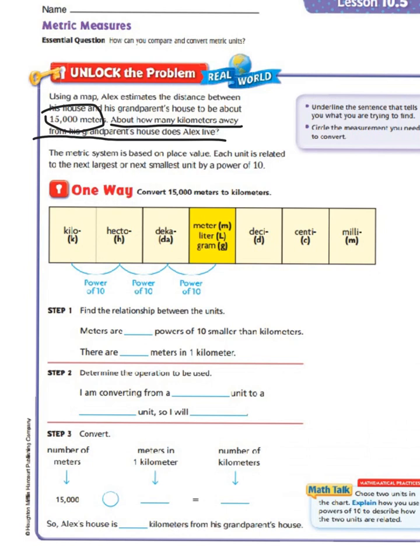So step one says to find the relationship between the units. Meters are, let's look, here's meters one two three, so that would be three powers of 10 smaller than kilometers. So there are one thousand meters in one kilometer.